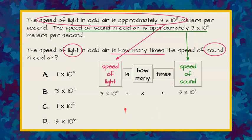So there's our equation. The speed of light is how many times greater than the speed of sound, or how many times the speed of sound.